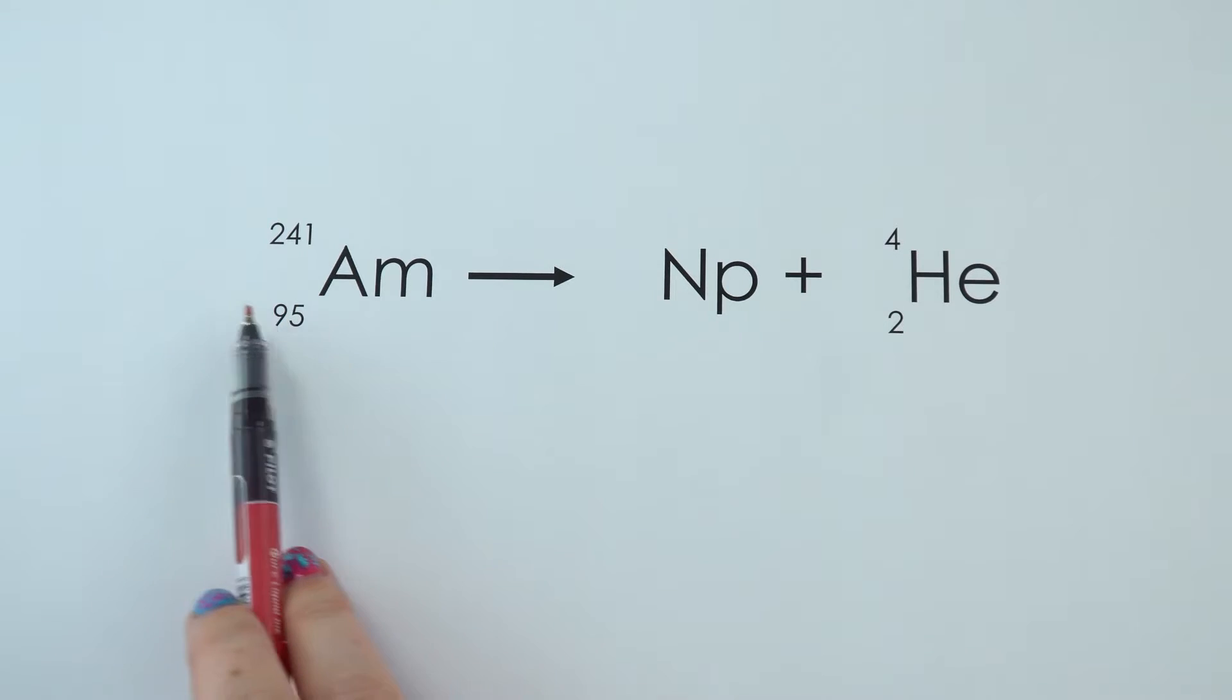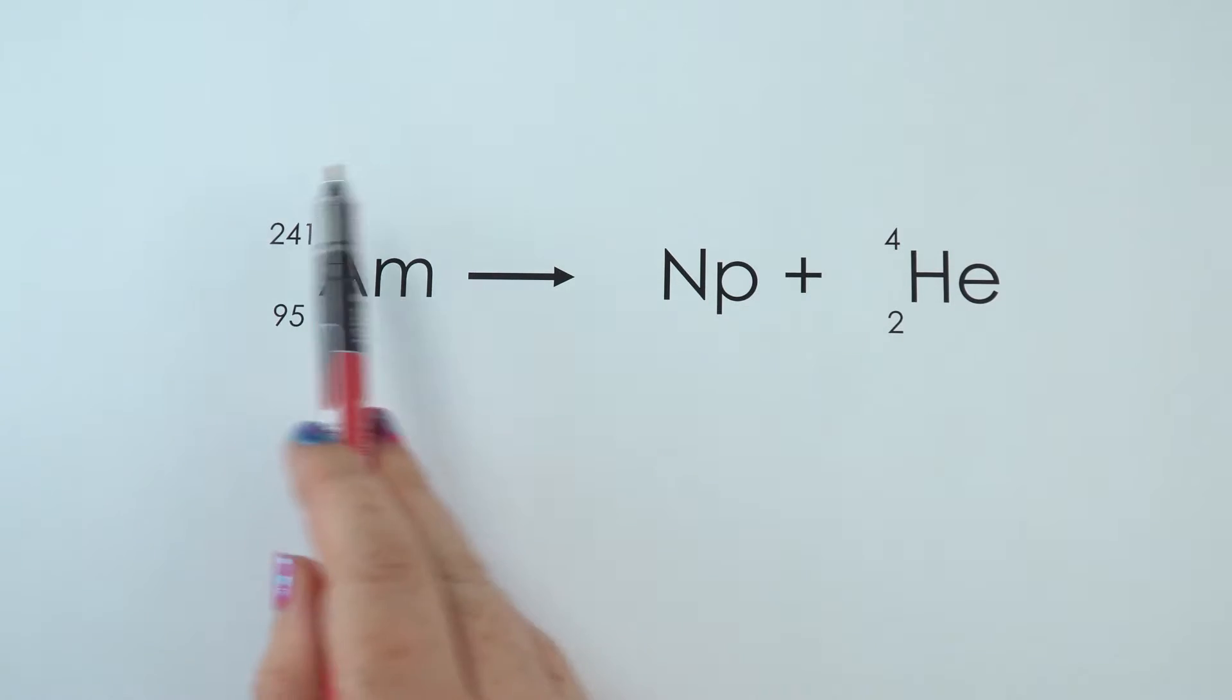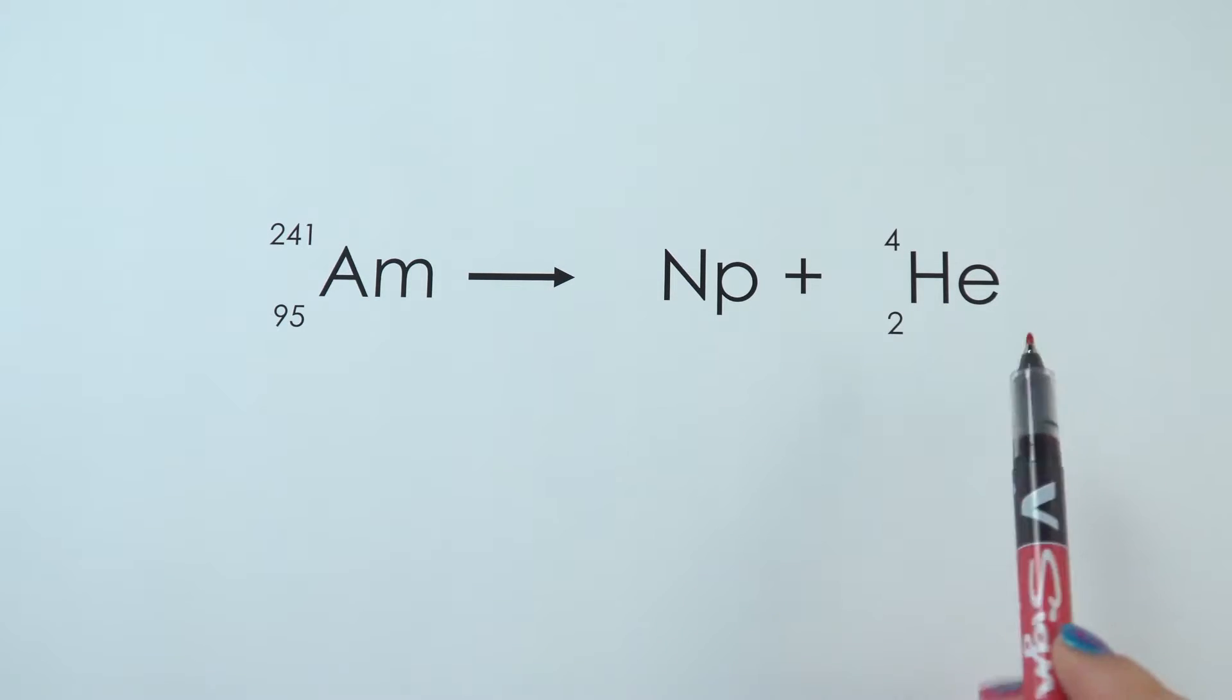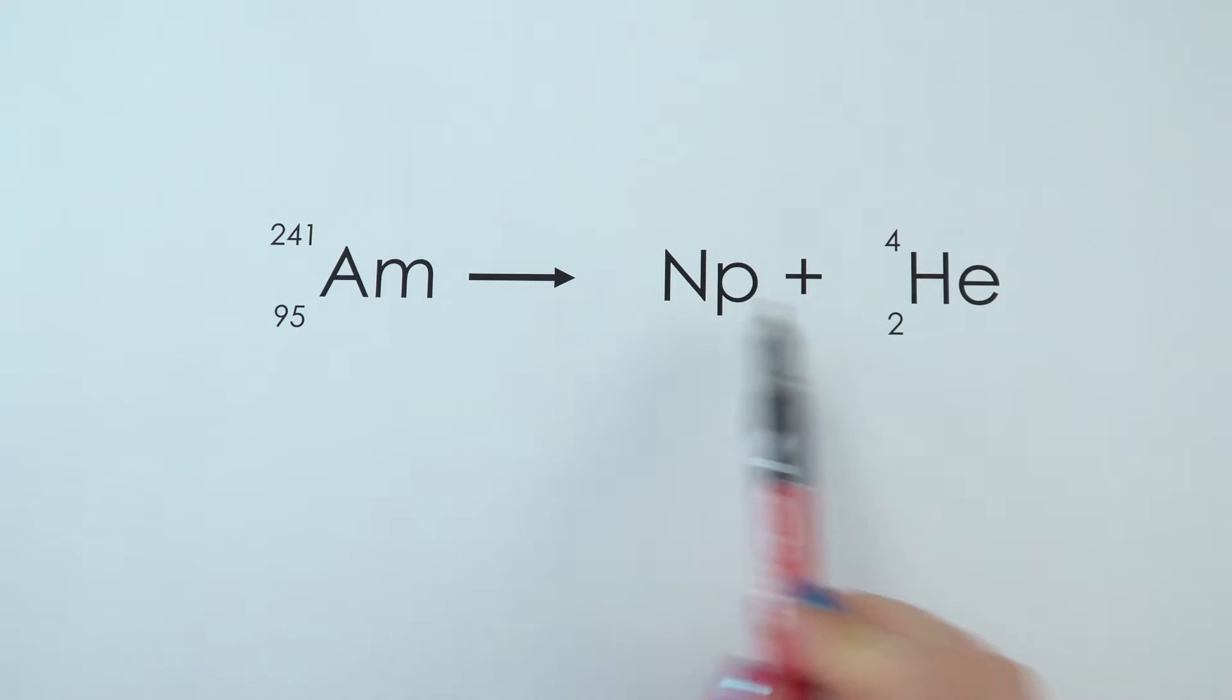Here is an example. So here we have a highly radioactive element, and it is going to lose an alpha particle, so it's going to lose a mass of 4 and then 2 protons. The sums we need to do are 241 minus 4, so 241 minus 4 will give us 237.